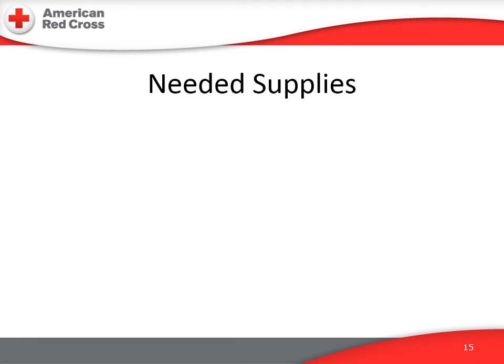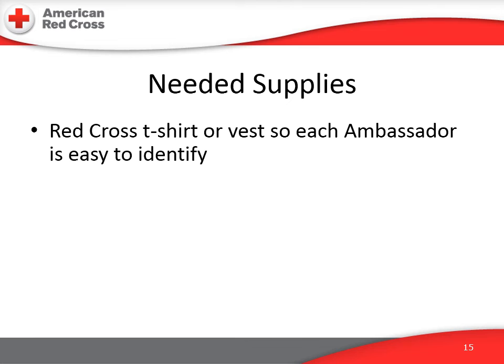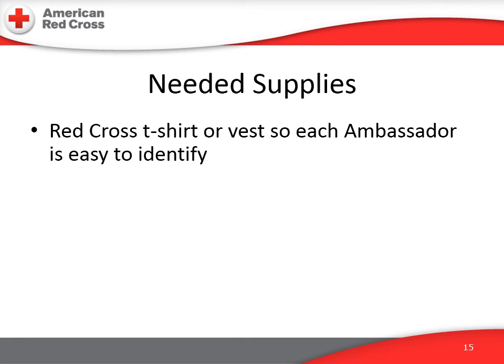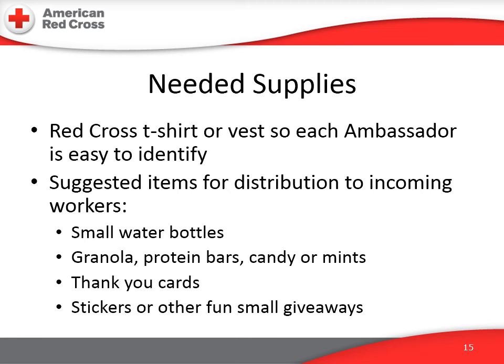You will need supplies to support the Ambassador Program. Securing Red Cross T-shirts or vests for Ambassadors can be done through Staff Services — vests may come from Logistics or the local chapter, and T-shirts may be specially made for Ambassadors. Leads will need to make a trip to the local Dollar Store or Department Store to purchase most supply items. Purchasing items for the Ambassador Program is an allowable expense and can be done using a Mission Card or a Red Cross Purchasing Card. Talk to your supervisor about what purchase method works best.